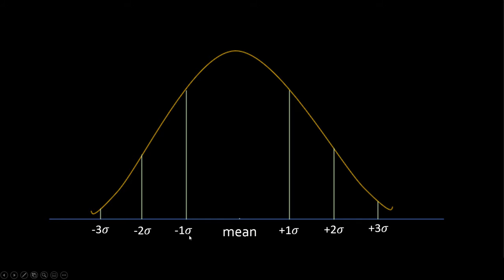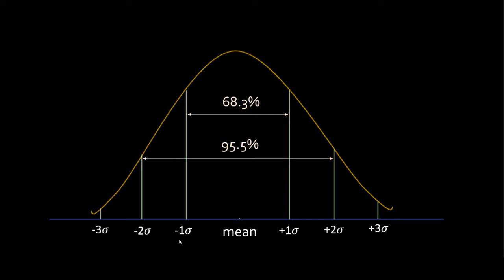By conducting many tests on normally distributed datasets, mathematicians and statisticians found that 68.3% of data points in any normal distribution fall within plus and minus one standard deviation. Similarly, 95.5% of all data points fall within plus and minus two standard deviations, and 99.7% fall within plus and minus three standard deviations. You can use this knowledge to remove outliers — the general guideline is that any data point beyond three standard deviations can be treated as an outlier, though there is no fixed rule.